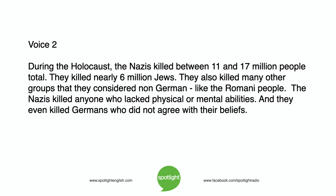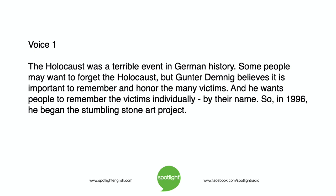During the Holocaust, the Nazis killed between 11 and 17 million people total. They killed nearly 6 million Jews. They also killed many other groups that they considered non-German, like the Romani people. The Nazis killed anyone who lacked physical or mental abilities. And they even killed Germans who did not agree with their beliefs. The Holocaust was a terrible event in German history.